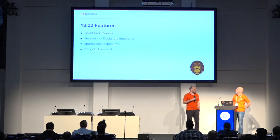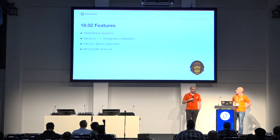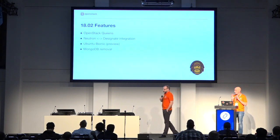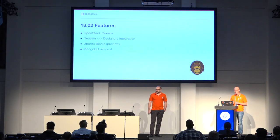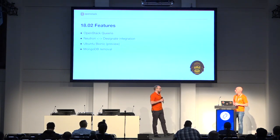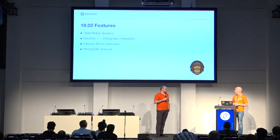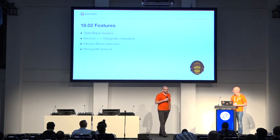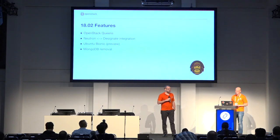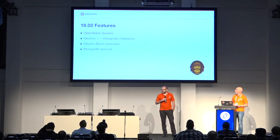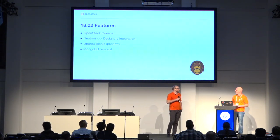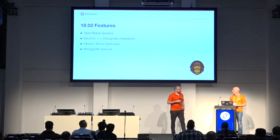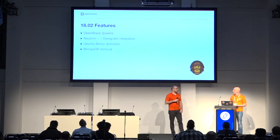I'll walk through what we've delivered to each release this past year. The charms project is a deployment project, so we don't release on the same date as the upstream OpenStack release. We try to release within two weeks of the release — generally we're within two days. For February, we supported the OpenStack Queens release. That's also included in Ubuntu Bionic, which gives it five years of long-term support. The charms will support Bionic as long as Bionic is supported.